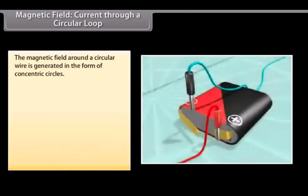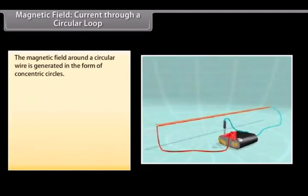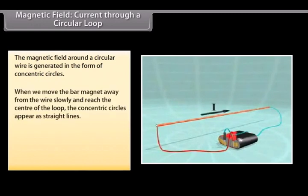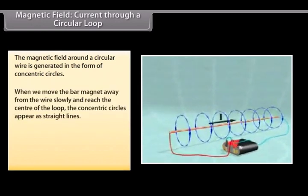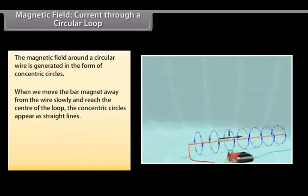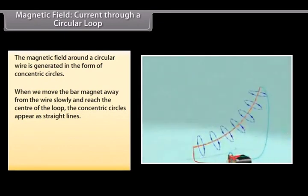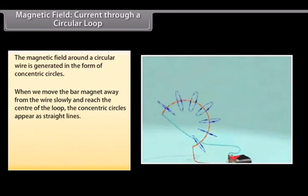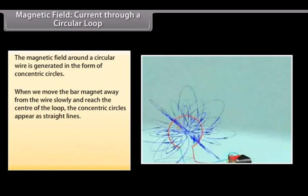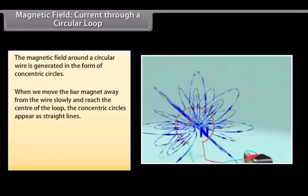Magnetic field: Current through a circular loop. Let us now look at what happens when the wire through which we passed the current is placed in a circular manner. The magnetic field around it is generated in the form of concentric circles. Try moving the bar magnet away from the wire slowly. By the time we reach the center of the loop, the concentric circles appear as straight lines. The entire magnetic field appears as a straight line.